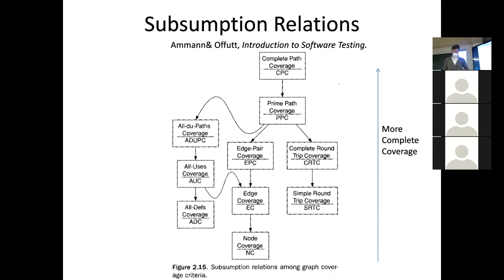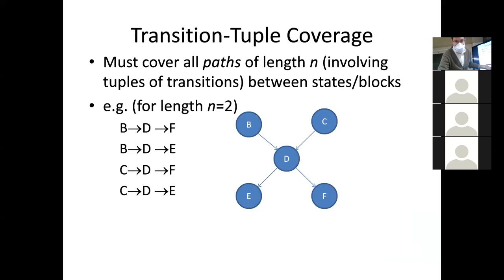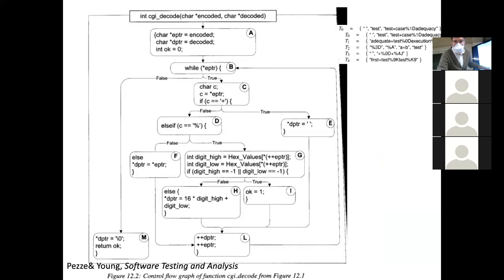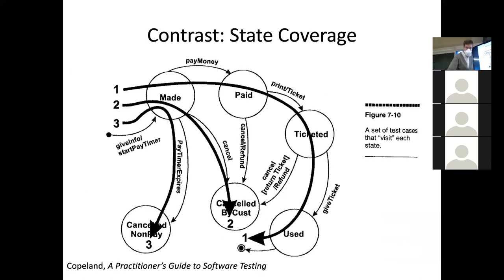State coverage is a certain notion of thoroughness, just like you might explore all equivalence classes or an orthogonal array that will achieve all possible pairs among a set of fields in a form. Coverage allows you to achieve a certain thoroughness. And if you haven't achieved that thoroughness, it's kind of hard to argue that you've thoroughly tested this program, because you didn't even test the whole screen of it or you didn't even test this possibility.